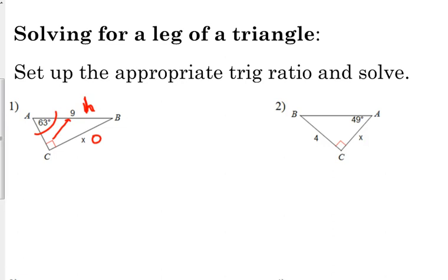Sine. O and H is sine. So, let's set it up. The sine, it's not theta this time, or X or A or whatever. We have a measure. 63 degrees is equal to the opposite, X, over the hypotenuse, nine.